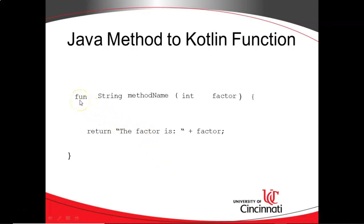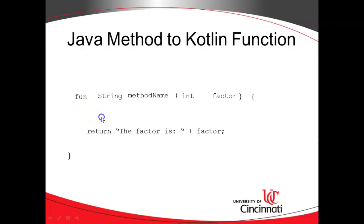Now we also have the word fun, which means function. So in Kotlin, that's how we declare a function — similar to what we would call a method in Java. So at this point, we've dropped the access modifier public, we're assuming public, and we've declared this as a function. But there's more work to be done.